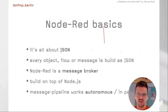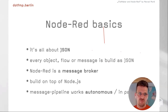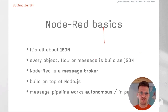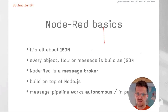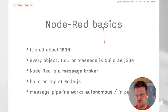It's all about JSON. We know JSON as FileMaker developers, and Node-RED goes a bit further — everything is JSON. Every object, every flow, every message is built on JSON. Node-RED is a kind of message broker: objects send messages to each other and Node-RED is the platform that does it for you. It's built on top of Node.js — a JavaScript server, highly parallel — and the message pipeline works autonomously. If you deploy your flow, it works in parallel and is highly scalable.